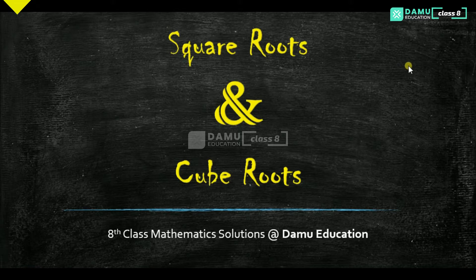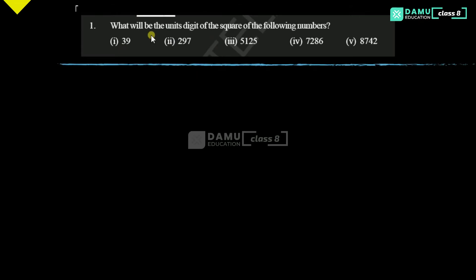So in this module, we are going to start our new chapter, that is square roots and cube roots. Let's start our first exercise, first question: what will be the unit digits of the square of the following numbers?